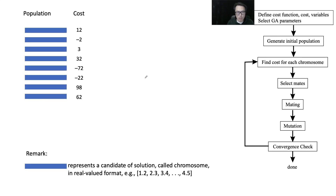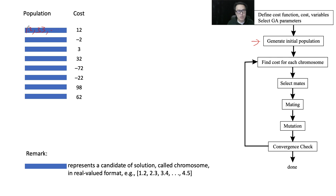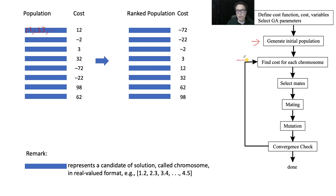To recall the overall genetic algorithm process: in the population we have any number of decision variables — for example the first is 1.2, the next is 3.3, and so on. We do not use binary strings; everything here is the phenotype as real numbers. After finding the cost of each chromosome, we need a cost function that takes x1, x2, x3, and so on. We fit these numbers into the cost function to obtain the cost.